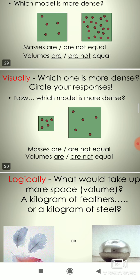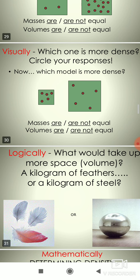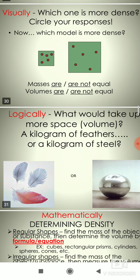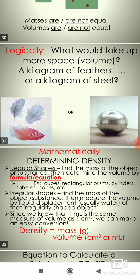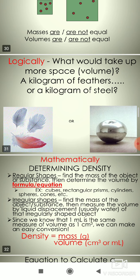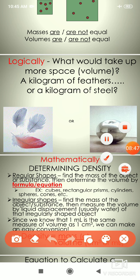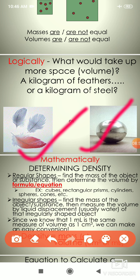To calculate density, there should be a certain amount of space. Logically — what would take more space or volume: a kilogram of feathers or a kilogram of steel? One kilogram of steel takes less space, which means steel has higher density.